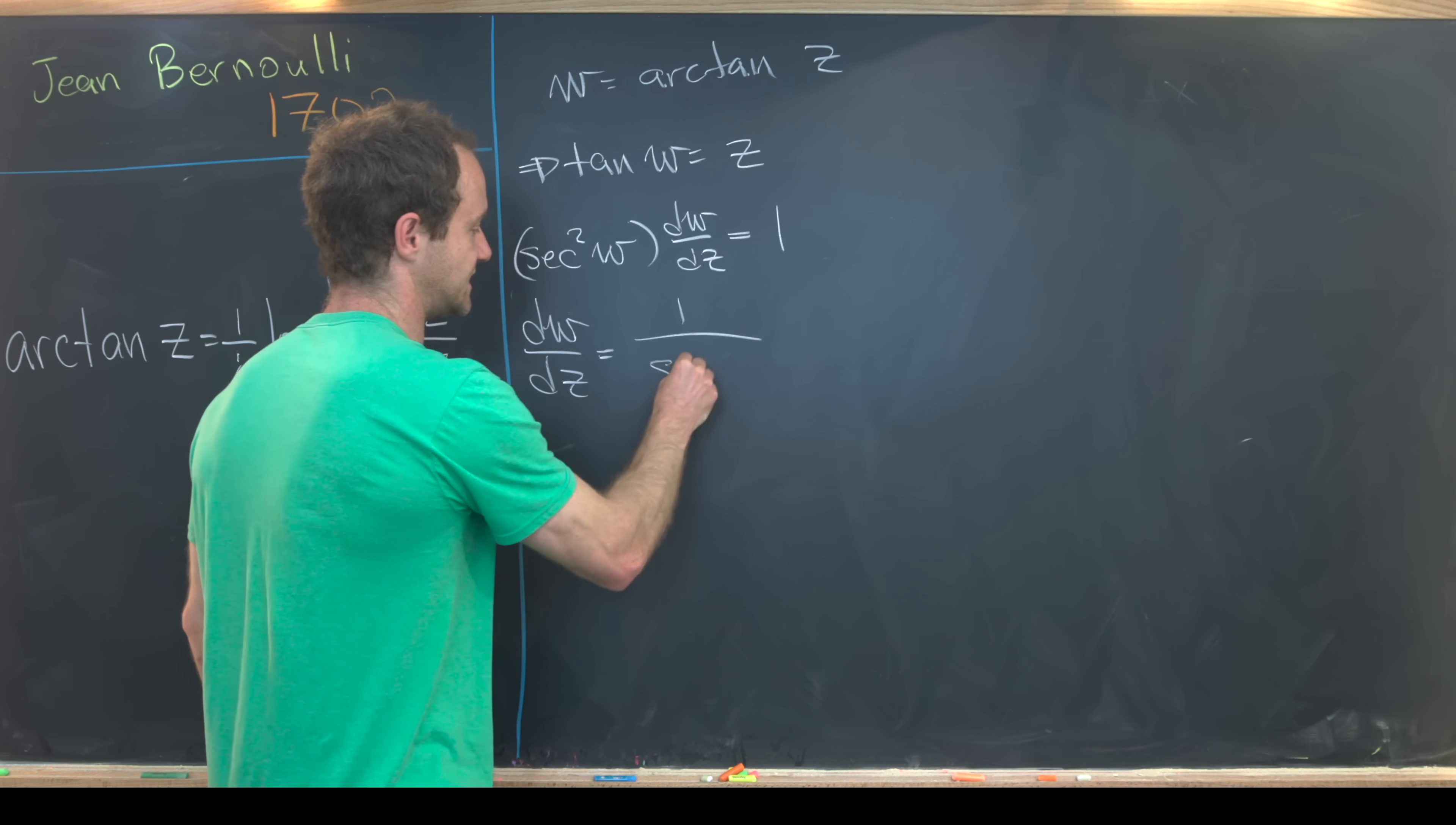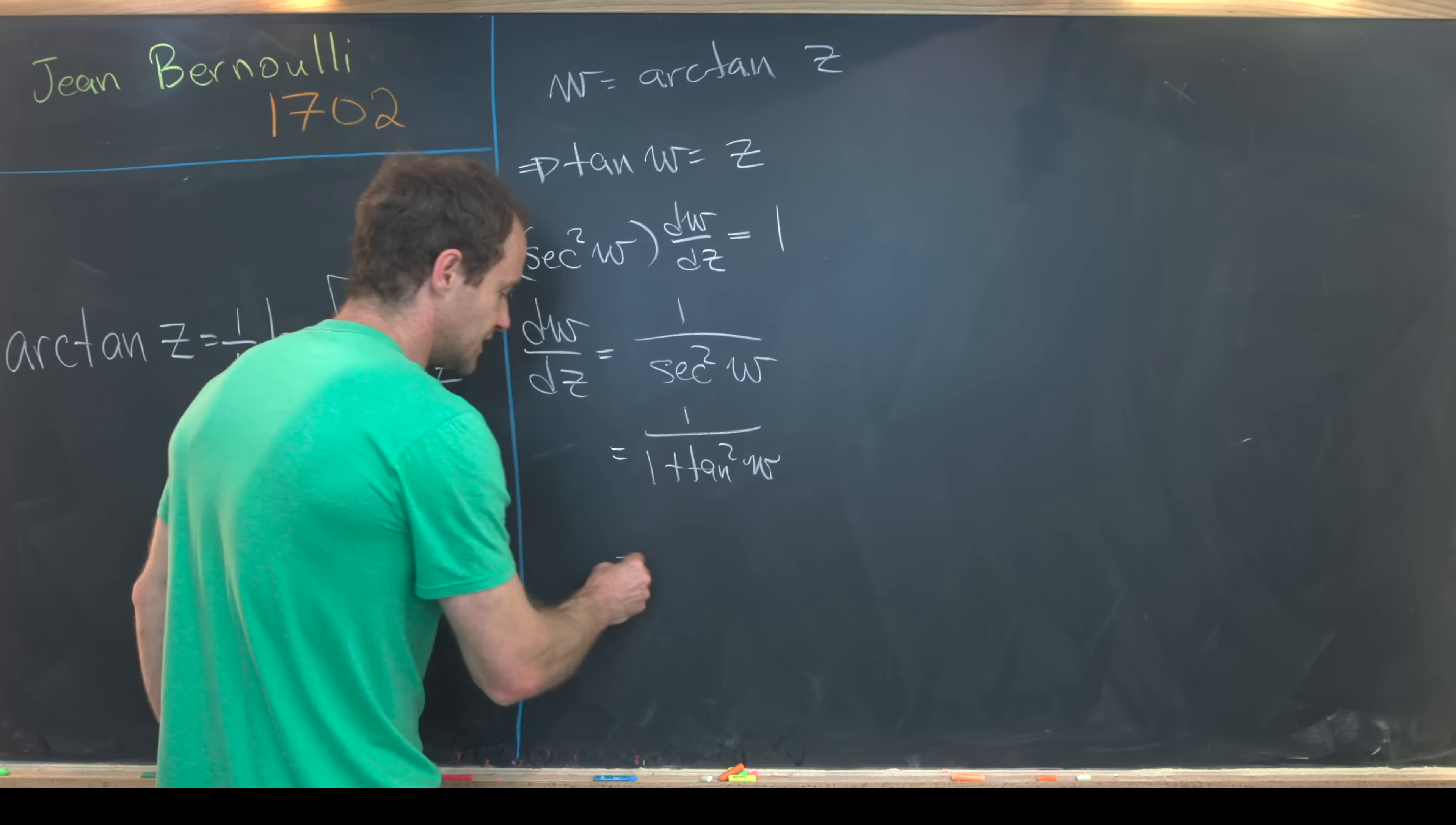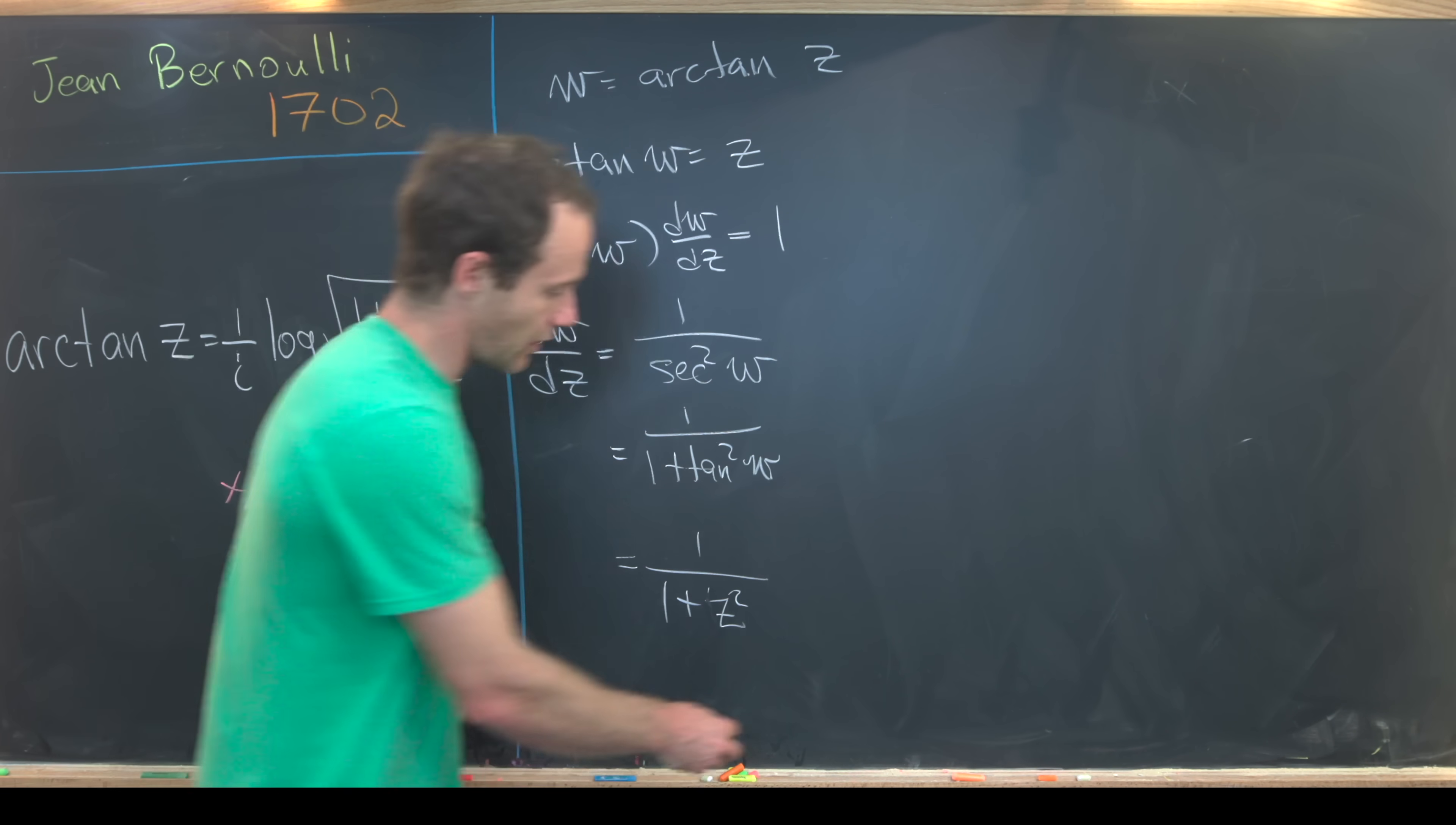The derivative of z with respect to z is one. So that gives us dw/dz equals one over secant squared of w. But secant squared of w is the same thing as one plus tangent squared of w. We know tangent of w is z, so that allows us to write this as one plus z squared. And now we've got this familiar derivative of the inverse tangent.